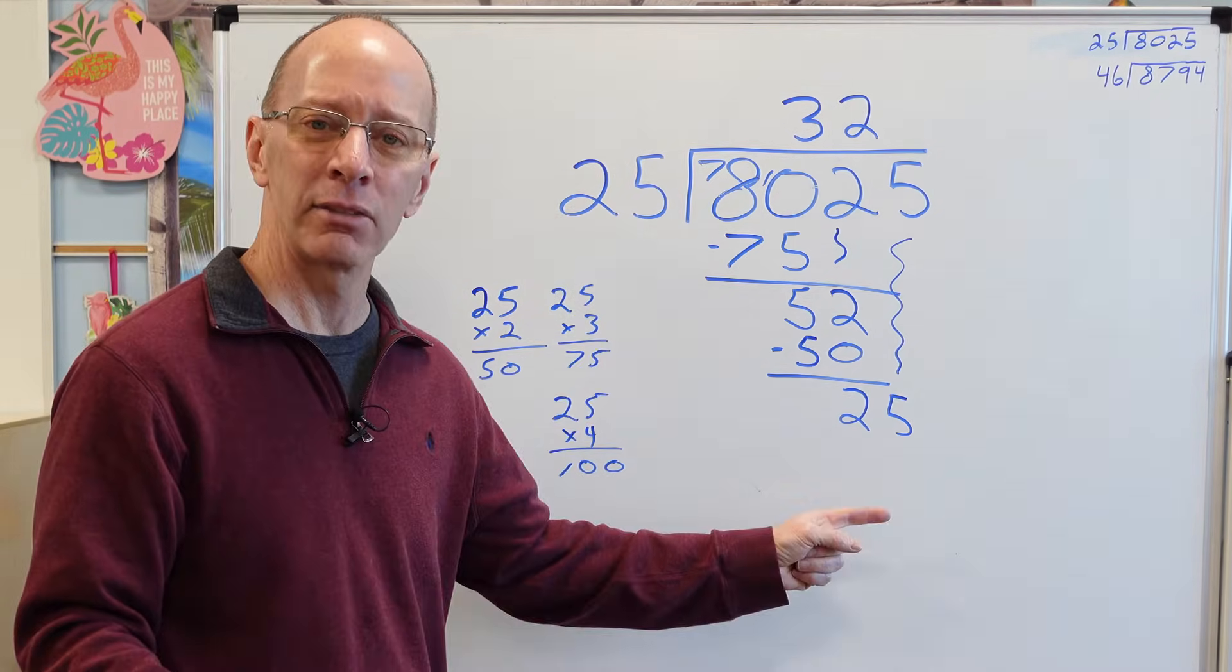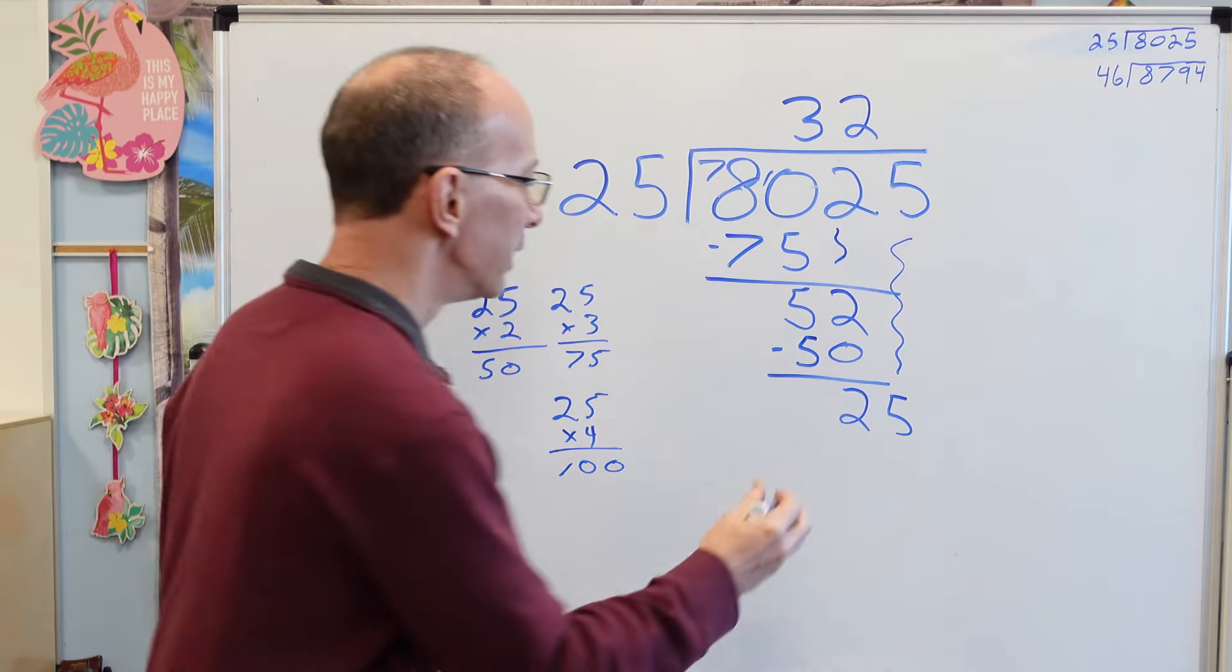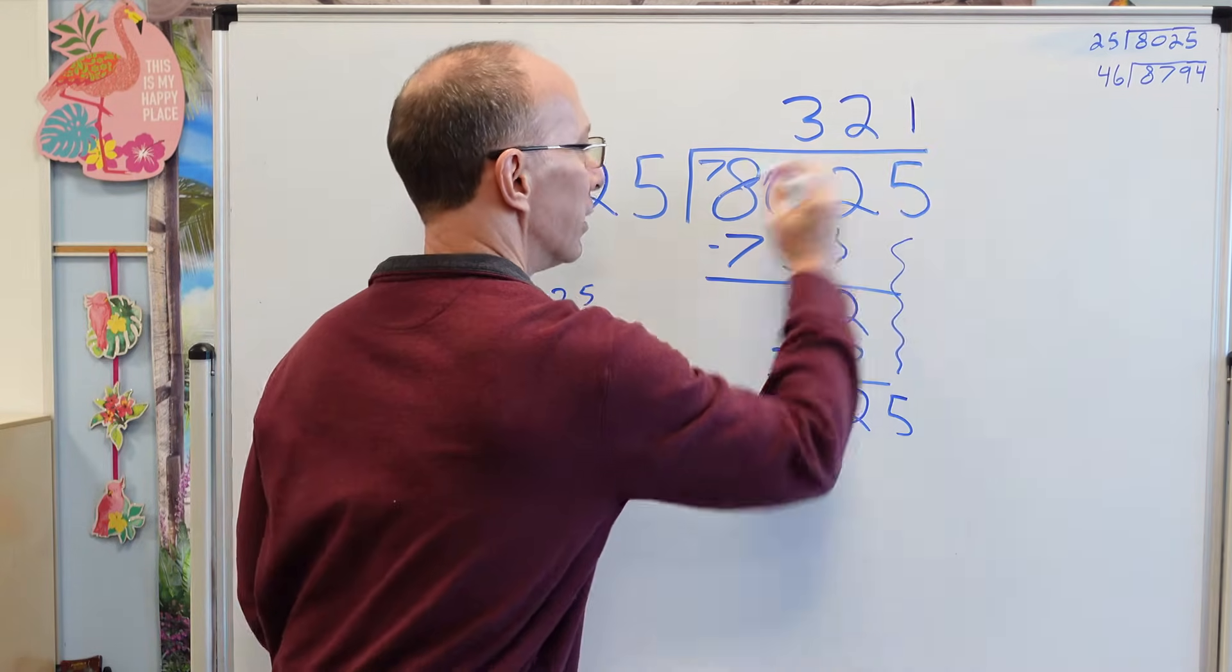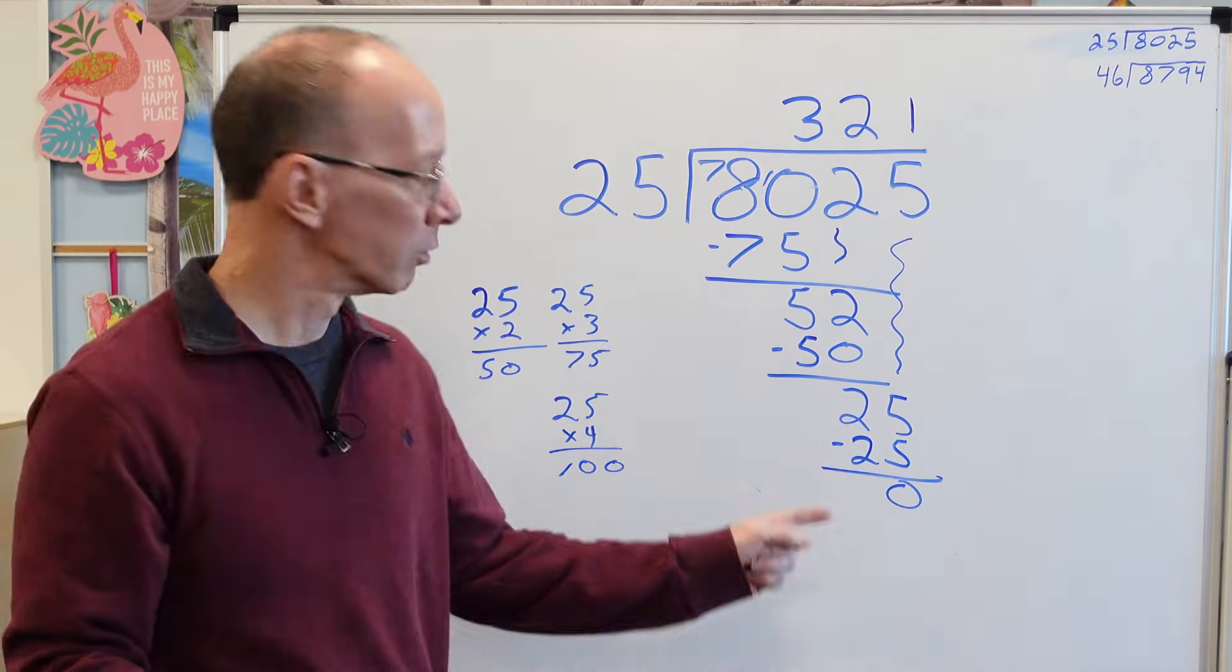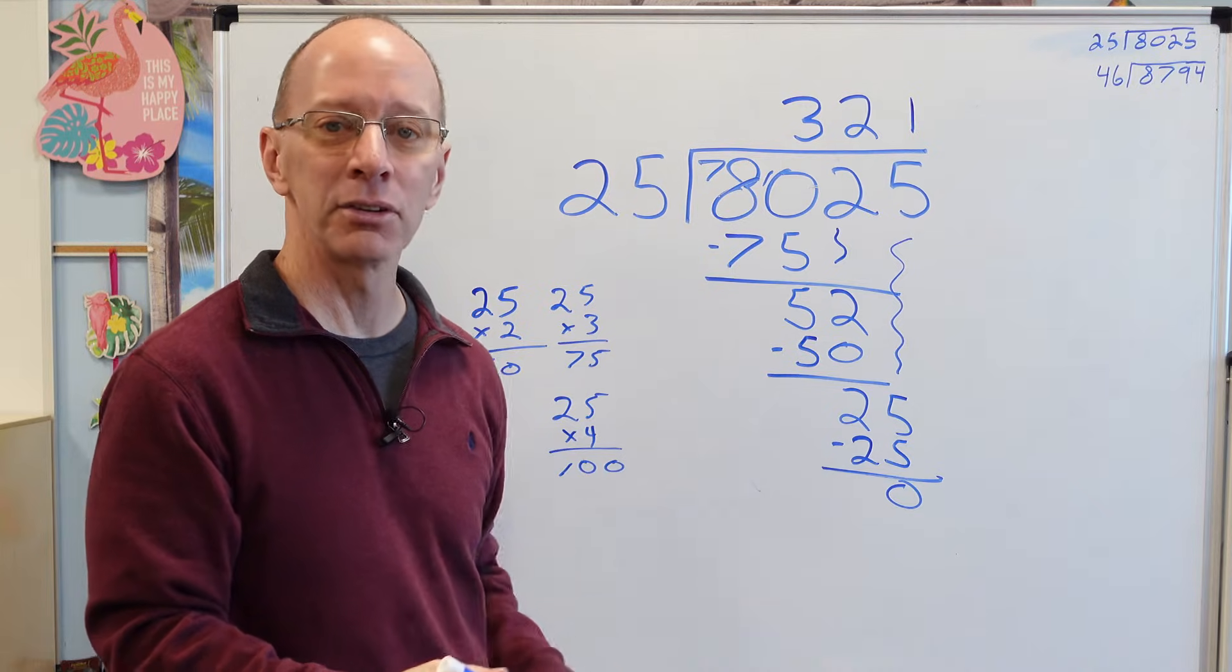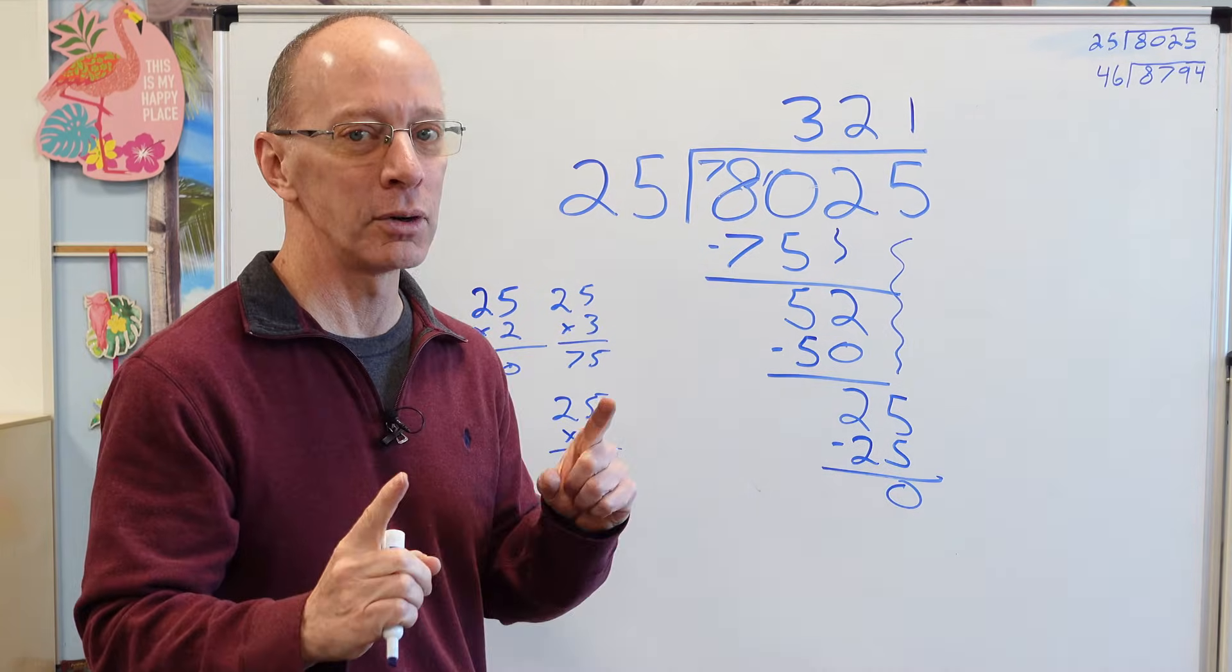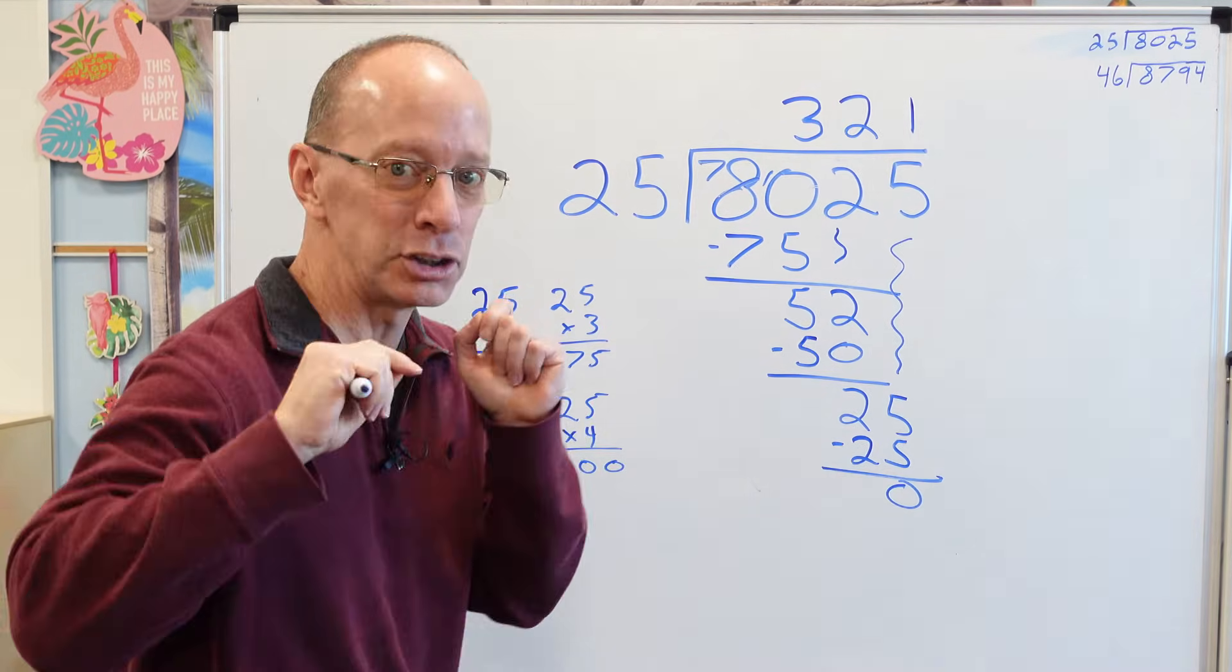How many times does 25 go into 25? 1. So I put a 1 right here. 1 times 25. Subtract, 0. Don't need to put that 0 up there. That's the answer, 321. Ready to do one more? I got a challenge one for you. Let's do it.